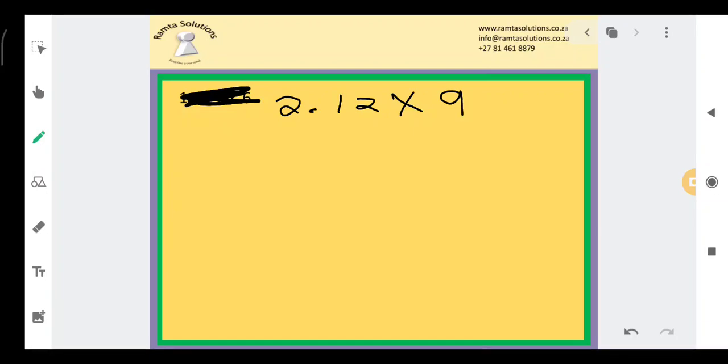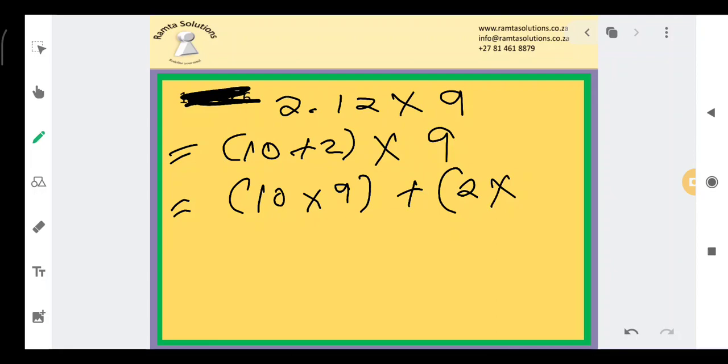So, since I'm teaching kids, let me just say 12 is the most complex. I will say 12 looks like 10 plus 2, times 9. I'm leaving my 9 like that. Now I can say 10 times 9 plus 2 times 9.